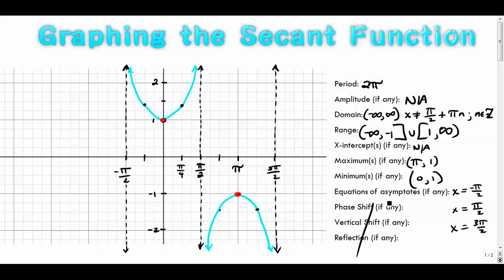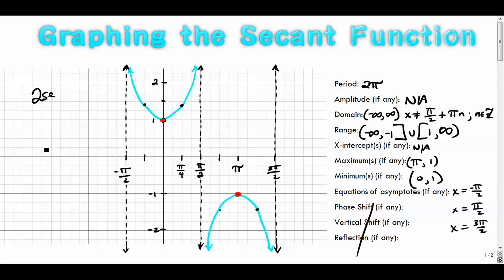We'll get back to transformations in the next couple of videos — I need to do cotangent first, then I'll come back and do a bunch of videos on transformations: how amplitude is affected when you change the number in front, like two secant x bumps the graph up, or one-half secant x squeezes it down. We can also vertically translate, change the period, phase shift, and reflect. That wraps it up for the secant function — next up is one over tangent, which is cotangent.